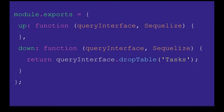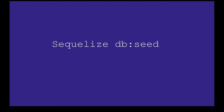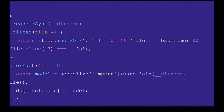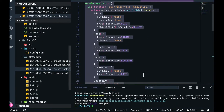dbdrop will drop the database. dbmigrate will run the migrations — it reads all the files from the migrations folder and runs them one by one to create the entities in the database table. Then we have dbseed, so we can also write seeders to execute them and seed some data in the database.